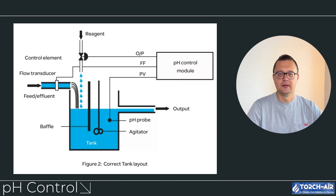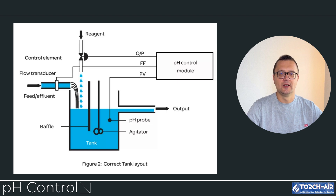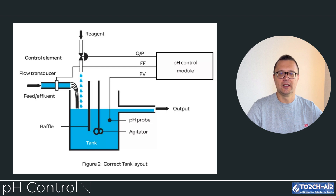pH control. In many scrubbers, especially those used to remove acidic or alkaline gases, the pH level of the absorption solution is critical. Maintaining the correct pH is necessary for the solution to effectively neutralize harmful gases. Automated pH meters continuously measure the acidity or alkalinity of the solution, and when the pH moves outside the desired range, the system automatically doses the appropriate reagents — acid or alkali — to bring the pH back to the optimal level. When a pH imbalance is detected, the automated dosing pump adds the necessary reagents to restore correct pH for efficient gas scrubbing. In cases of extreme deviations, the system can send alerts to operators if automatic dosing fails to stabilize the pH level.